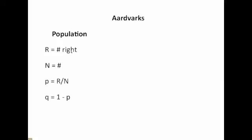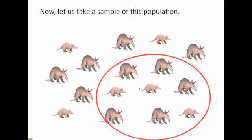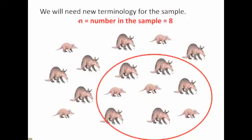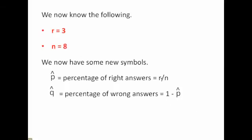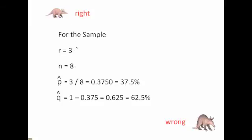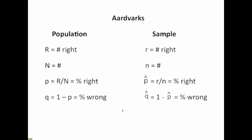Now, for the population: kappa R is the number right, kappa N is the total number, P is the percentage right, and Q is the percentage wrong. For the sample, lowercase n is the number in the sample, lowercase r is the number of right answers in the sample. P-hat is the percentage of right answers, which is lowercase r divided by lowercase n. Q-hat is 1 minus P-hat — the percentage of wrong answers in the sample. So for the sample we have r, n, P-hat, and Q-hat.